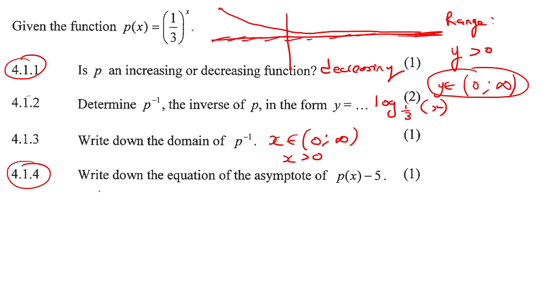Right, so we've done this one. Now we need to do this one: write down the equation of the asymptote of p if you move p 5 down. Very easy question. We know that the asymptote at the moment is on zero. We said that earlier. So now they said write down the equation of the asymptote of p, this graph's asymptote, if you move it down by five. So the asymptote will just move down by five.